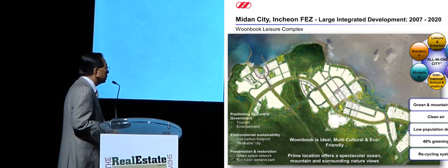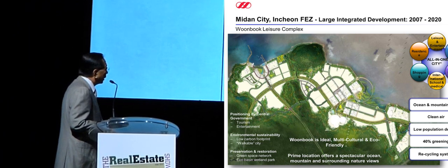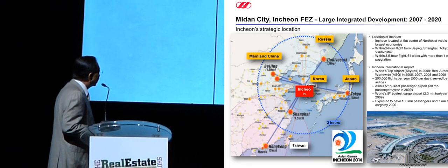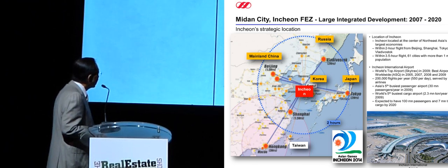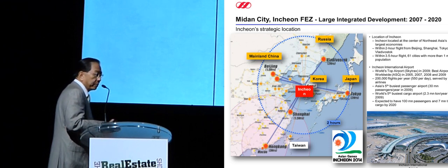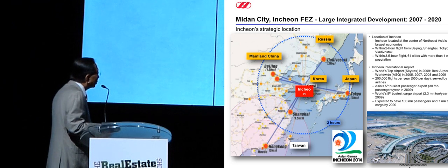The city offers ocean and mountain views, clean air, low population density, and 40% green recycled space. Within the city, we are building a high-density mixed-use development we call 'city in city.' Korea sits right in the middle of Beijing and Tokyo at almost equal distance, within a two-hour flight. We are building a circle of over half a billion people, with growing China and Japan — Korea is poised to play a major role in this Northeast Asian circle.